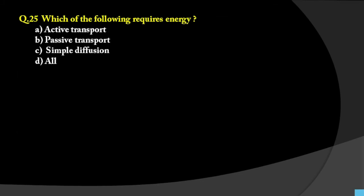Question number 25: Which of the following requires energy? Options about transport: active transport, passive transport, simple diffusion, or all of the above. Active transport — the word 'active' itself indicates energy is required. Passive transport requires no energy. Simple diffusion is also a type of passive transport. Therefore the answer is active transport, as energy is required.